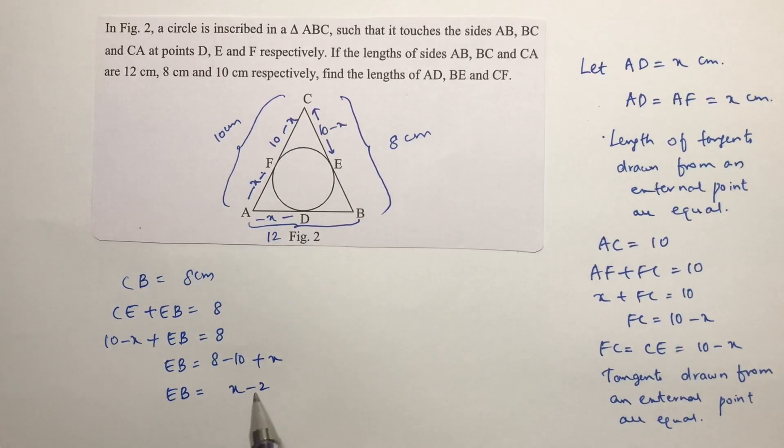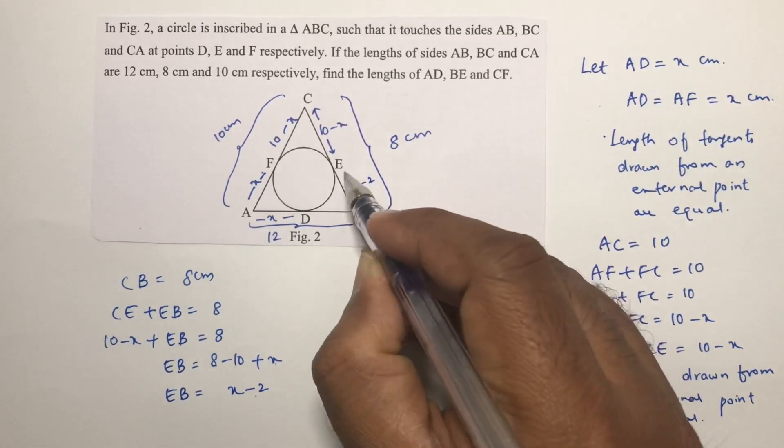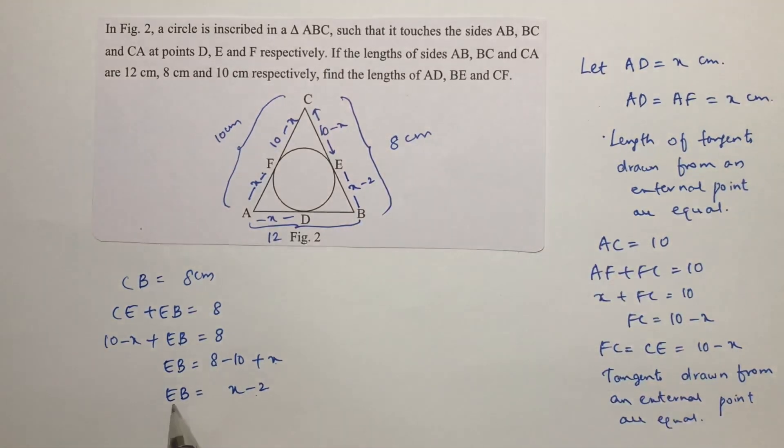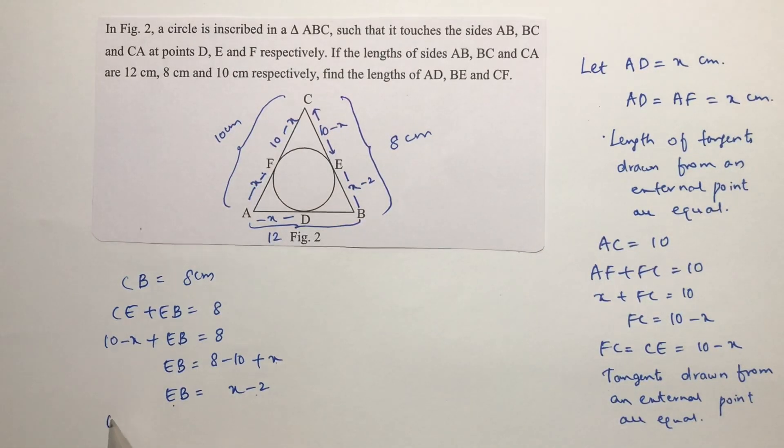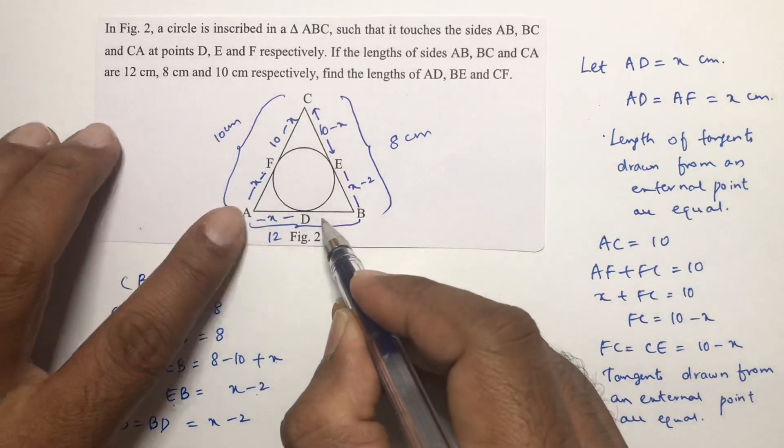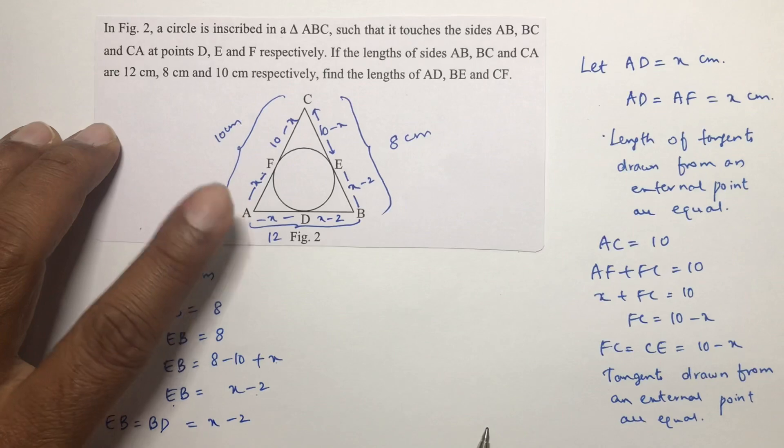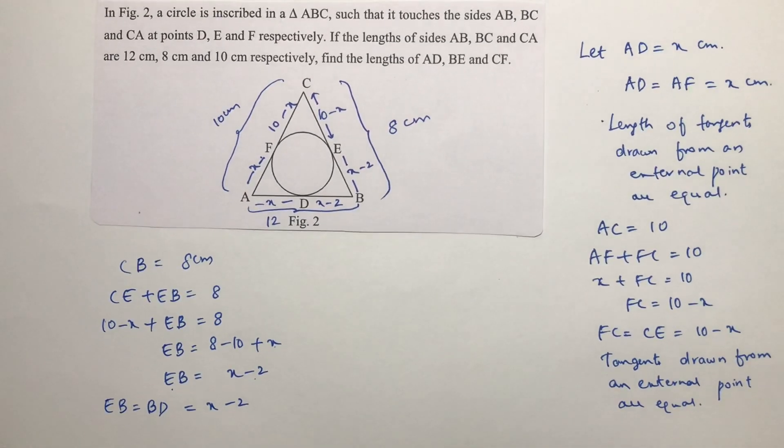This value will be x minus 2. If EB is x minus 2 then BD also, EB equals BD equals x minus 2, because BE equals BD. So this value will be x minus 2. Reason is same, length of the tangents drawn from external point.